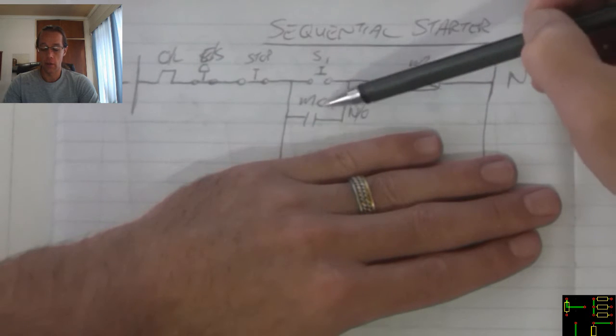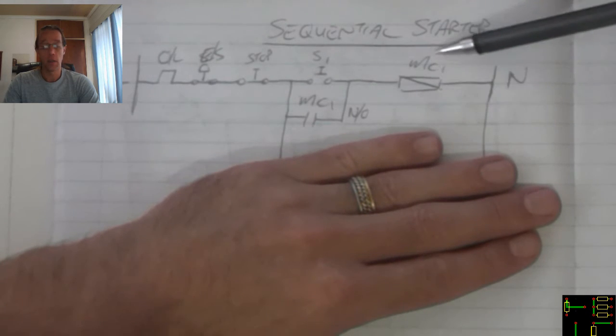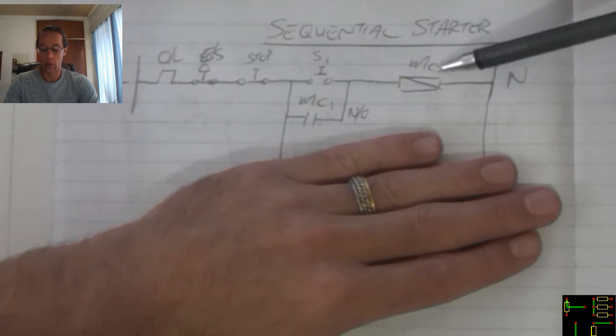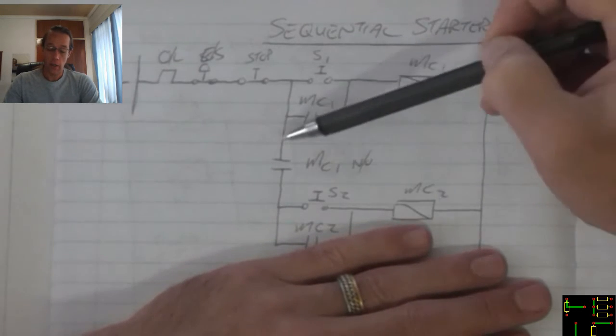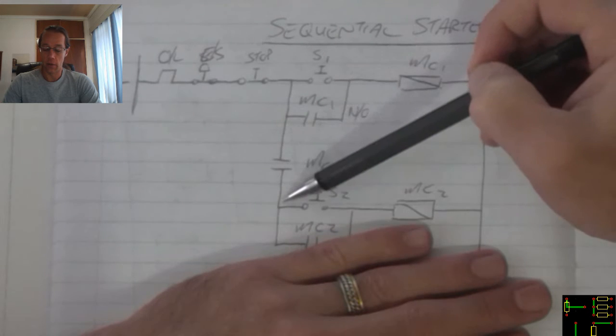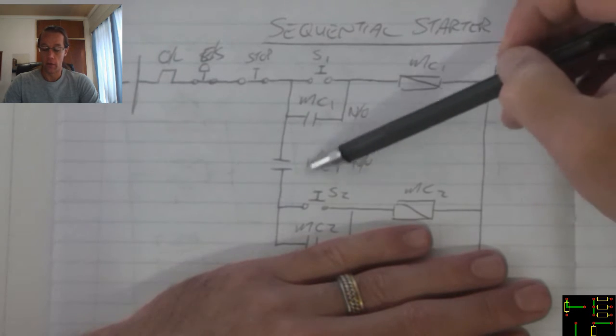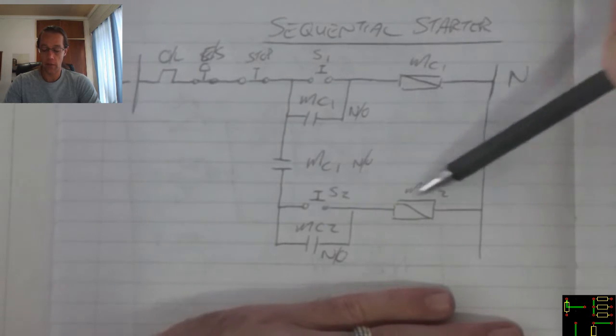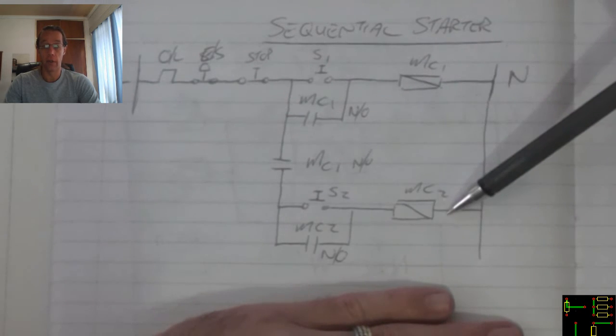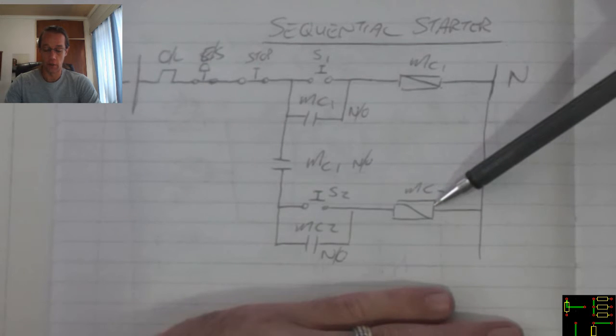Start with its latching contact which connects to MC1 or contactor number one. But we add a second normally open contact that is driven by contactor one which then feeds into a second branch of a direct online starter.